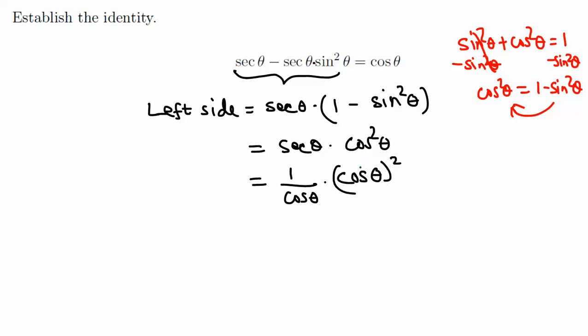Now there are two copies of cosine on the top, so one copy and one cancel. Just cosine theta survives on the top, which is the right side. That's how we get the right-hand side from the left-hand side.